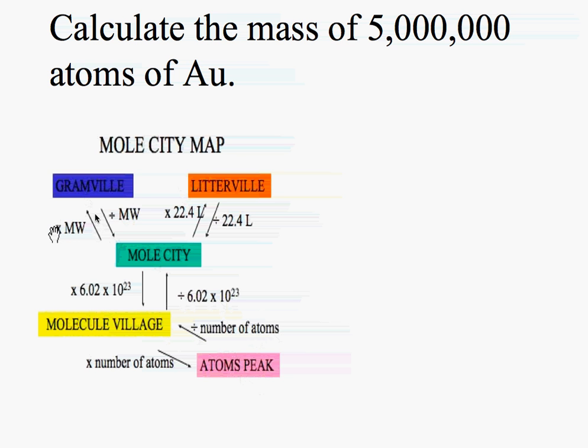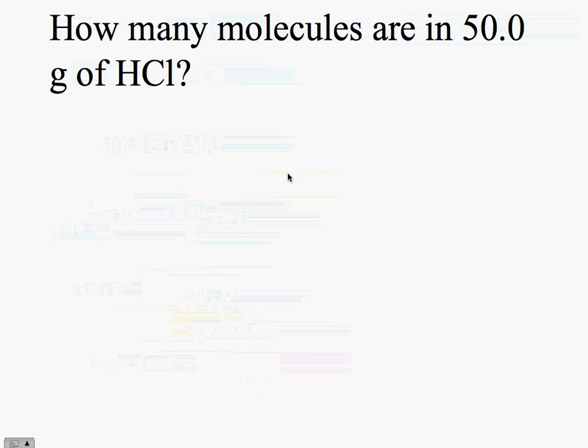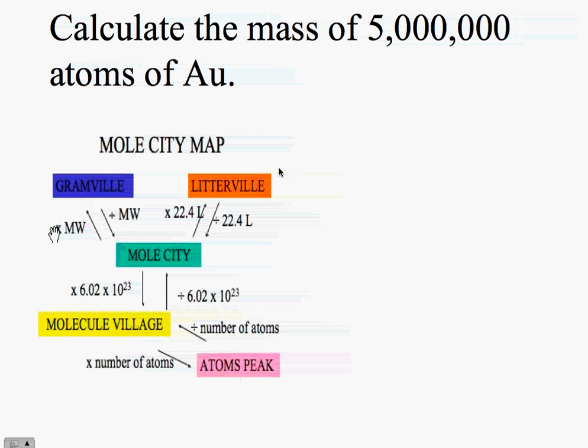If we take this here to our calculation we have, let's go back. We have 5.0 times 10 to the 6, divided by 1, divided by 6.02 times 10 to the 23rd.